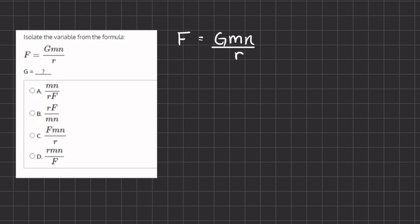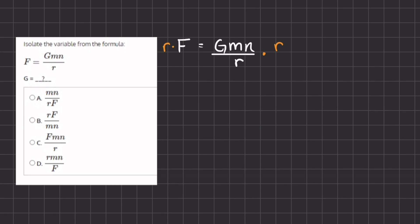The first thing we want to do in order to isolate g would be to get rid of this denominator. We're going to multiply r on both sides. So now we have r times F which gives us rF equals Gmn, because these two cancel out.